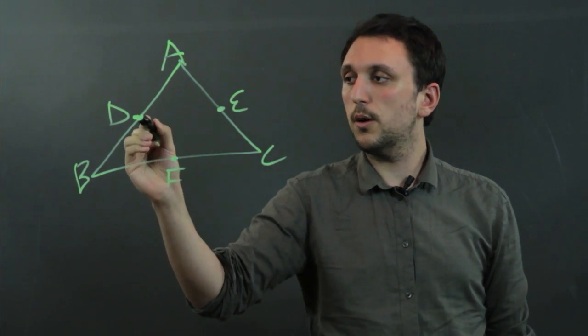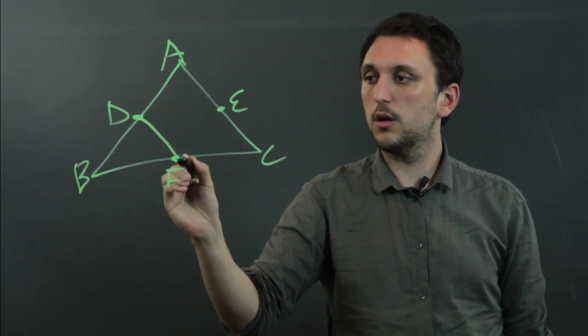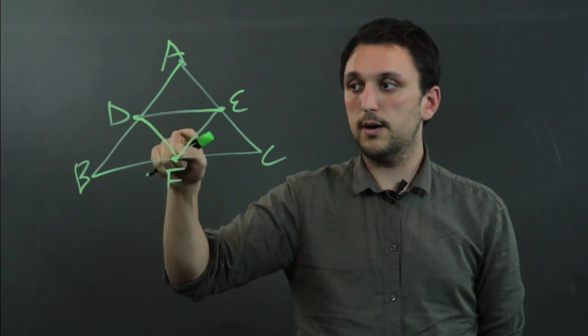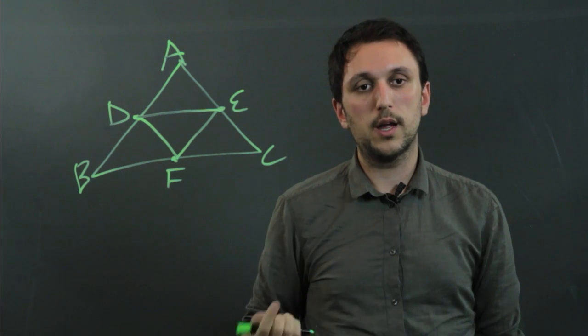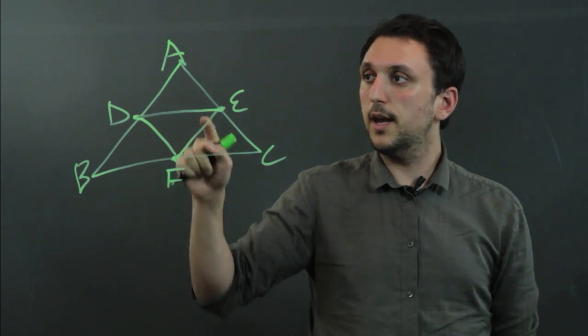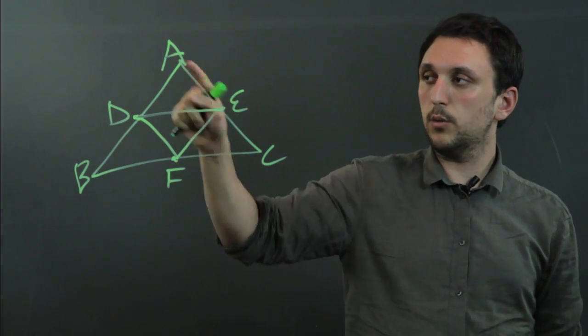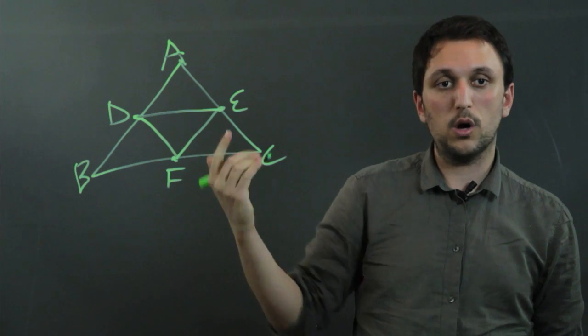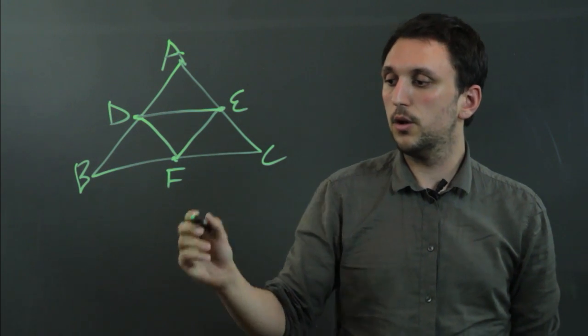So now if we draw these three line segments, we now have four equal triangles. Now this looks like an equilateral triangle, so all four of these would also be equilateral.